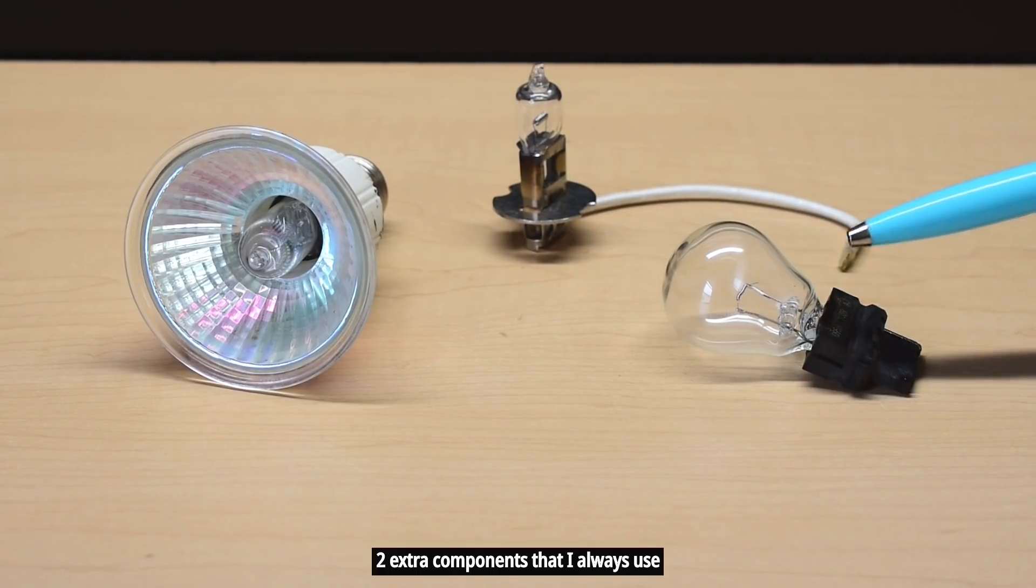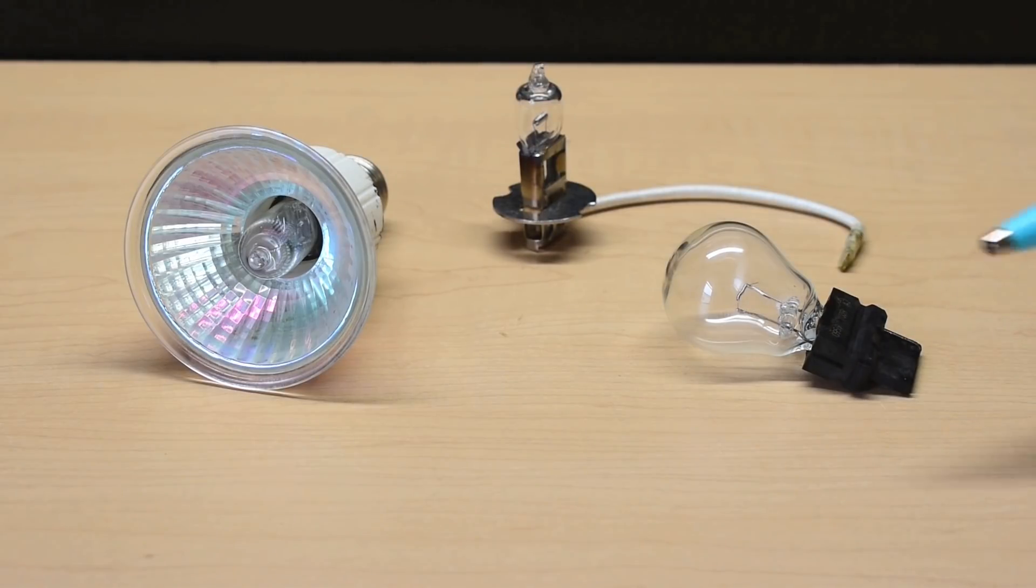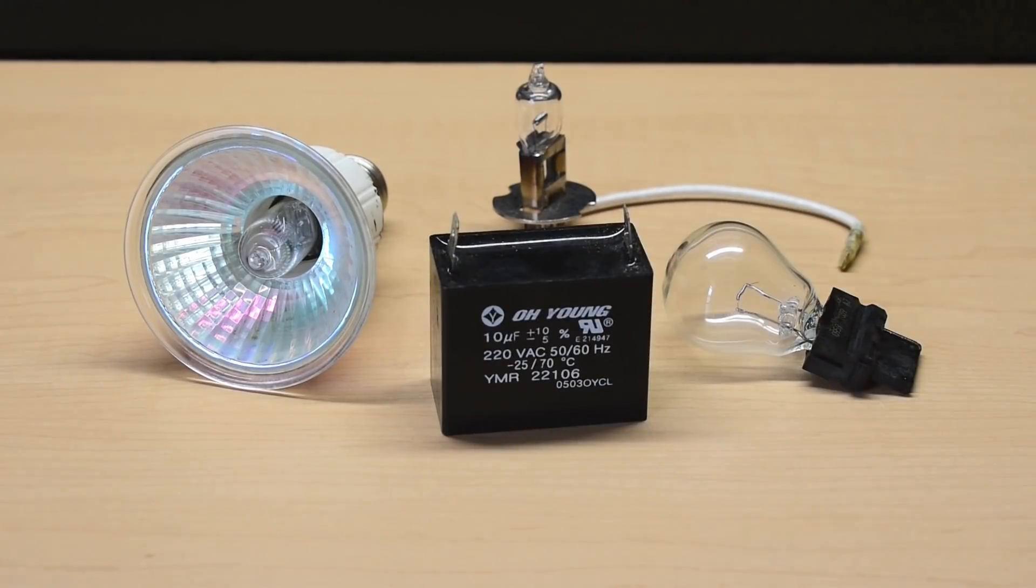Now in order to power this 12 volt, 27 watt lamp at full brightness without burning out the filament using 120 volts, you're going to have to limit the current. There's two ways to do that. One is by using a resistor, and we are not going to be using a resistor because the resistor will generate way too much heat. Instead, we're going to be using capacitors.